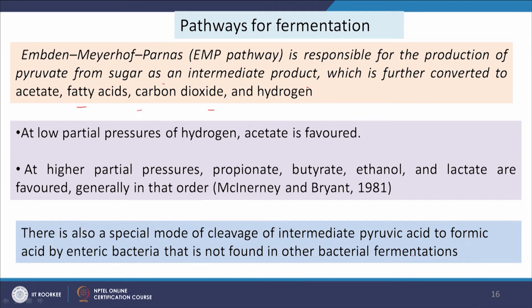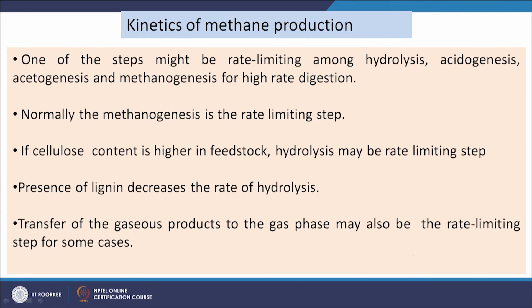There is also a special mode of cleavage of intermediate pyruvic acid to formic acid by enteric bacteria — not found in other bacterial fermentations. Therefore, formic acid to methane formation can occur only through enteric microorganisms. Now we will discuss the kinetics of methane production. Methane production takes place through a number of steps, and any slower step controls the rate of the overall process.